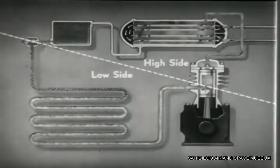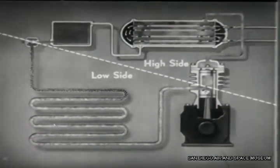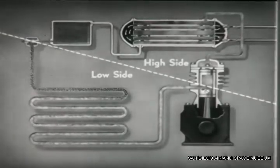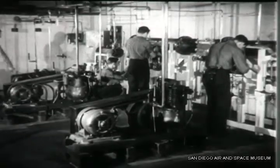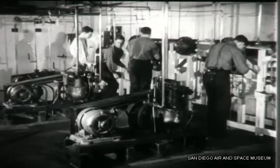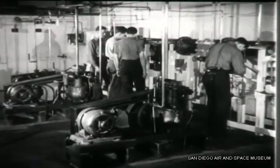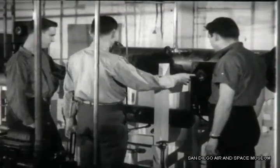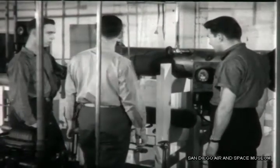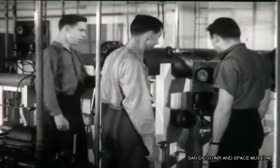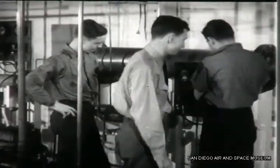Now that you've seen this simplified system, let's trace the flow of refrigerant through an actual refrigeration system. This is typical submarine equipment, set up this way for instruction purposes. On board, of course, it is crowded into much smaller space. That's why it is especially important to know every part of the system and what it does.